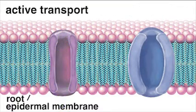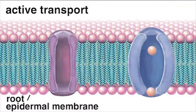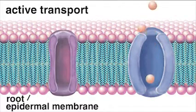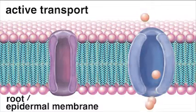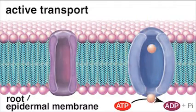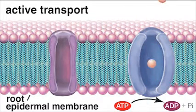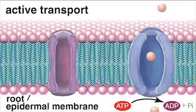Active transport of other molecules may also take place in the root hair, depending on the needs of the plant. Active transport requires energy, as the required molecules must be pumped across the membrane against their concentration gradient.